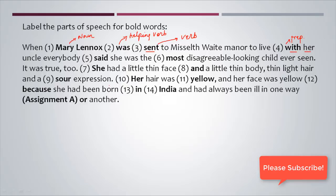'Everybody said' — 'said' is an action verb. 'Was the most disagreeable looking child ever' — 'most' tells us the degree or intensity of the feeling, so it is an adverb of degree. 'She had a little thin face' — 'she' is a pronoun because it replaces the name Mary and the actual name has been substituted by the word 'she'.